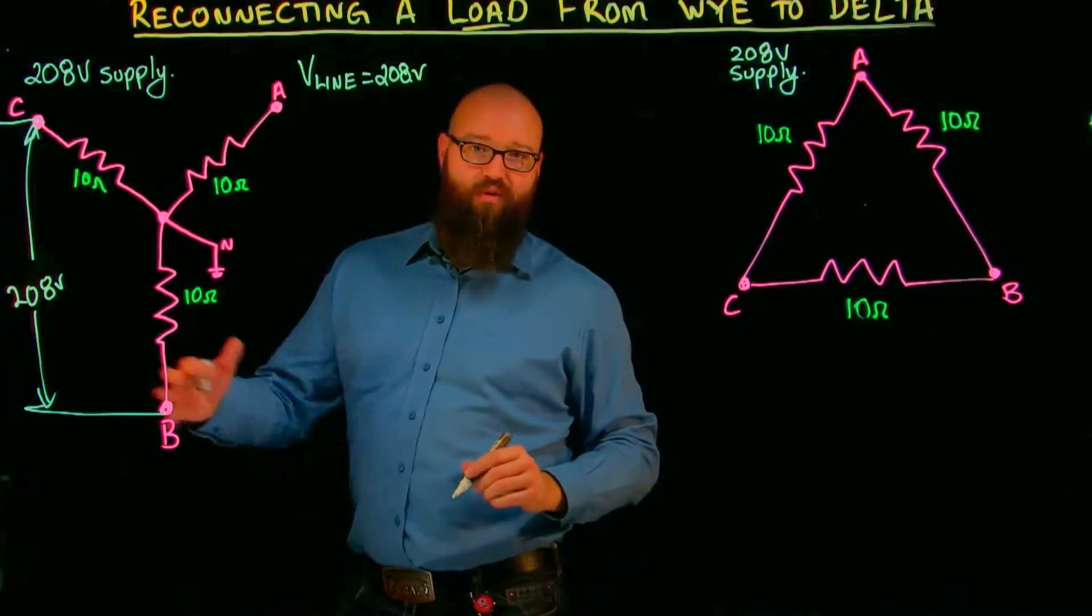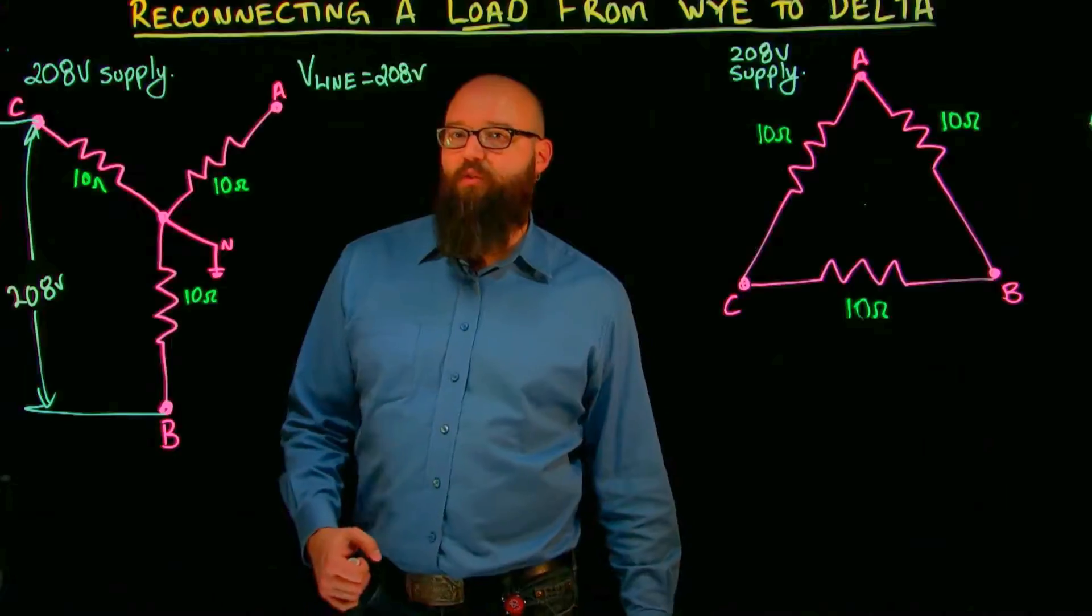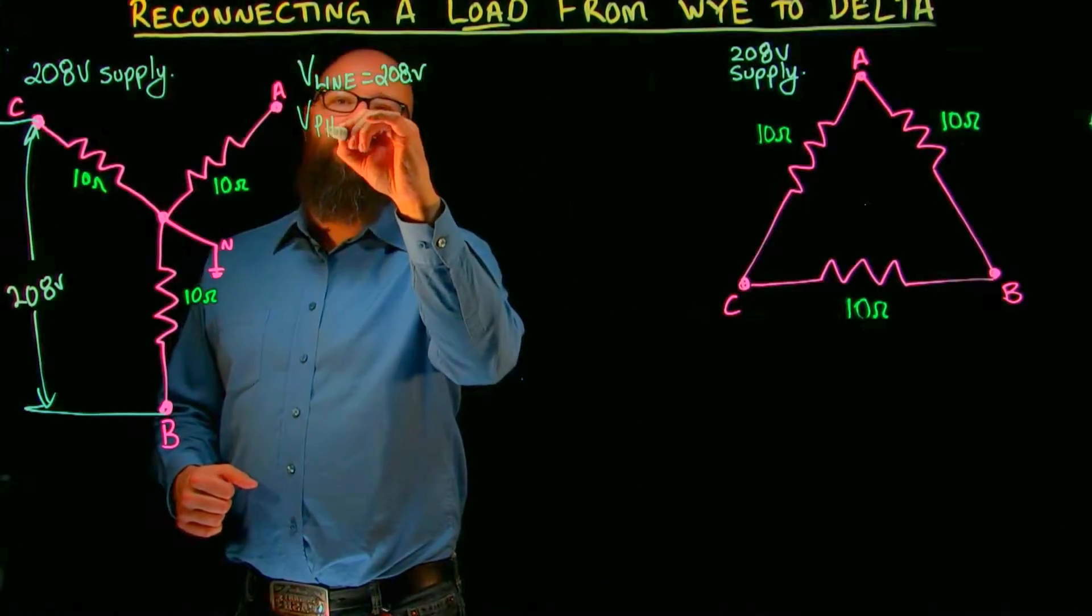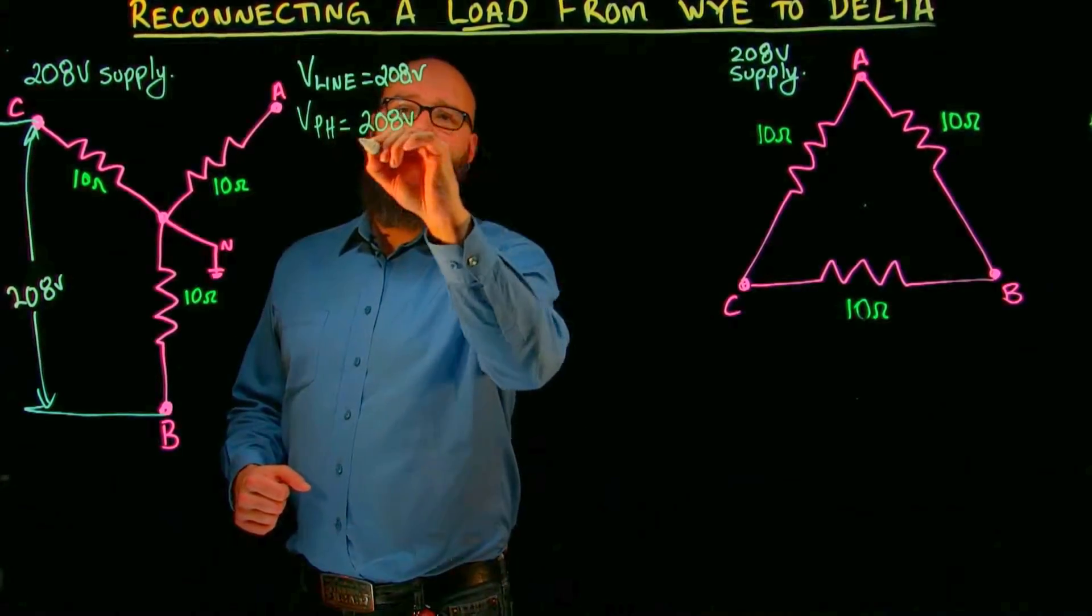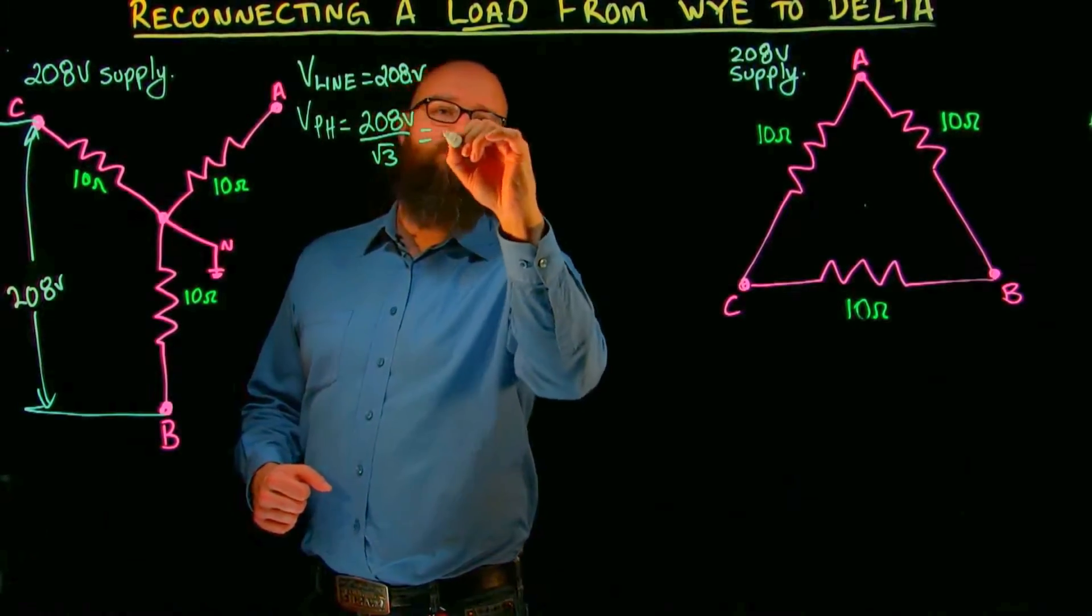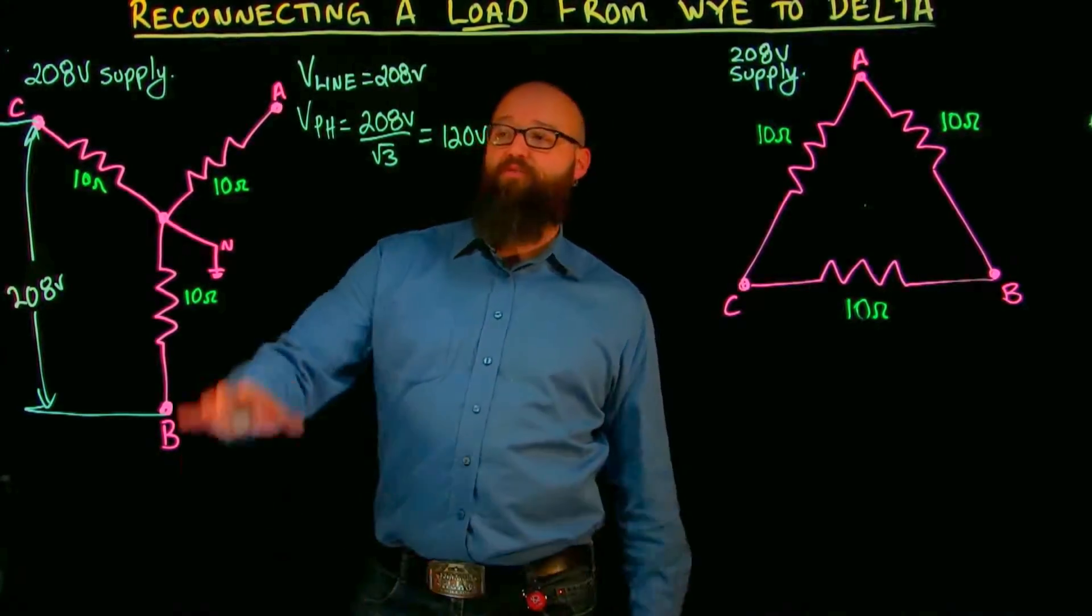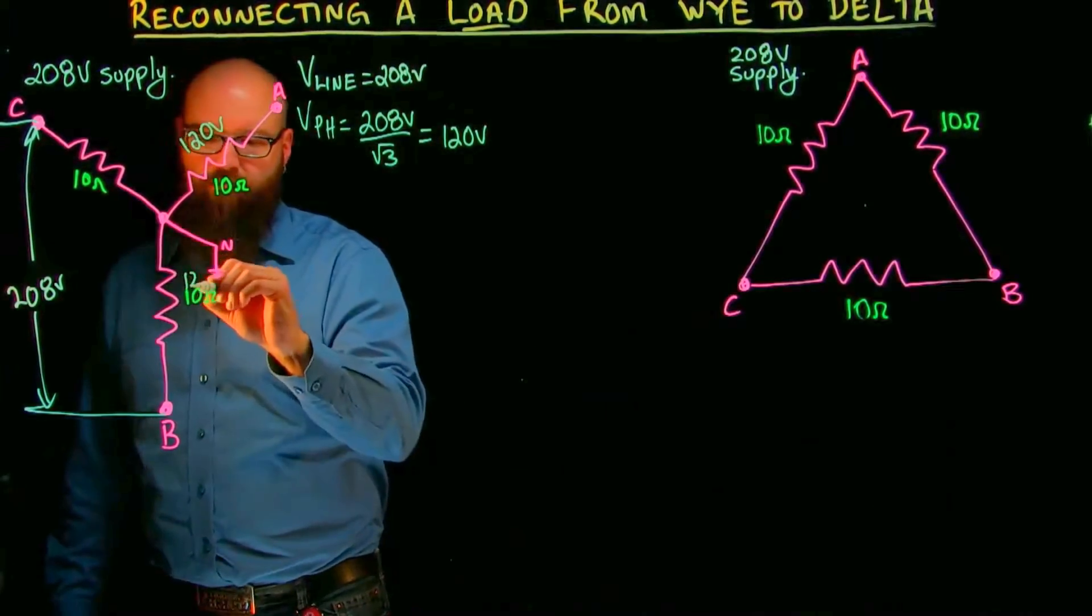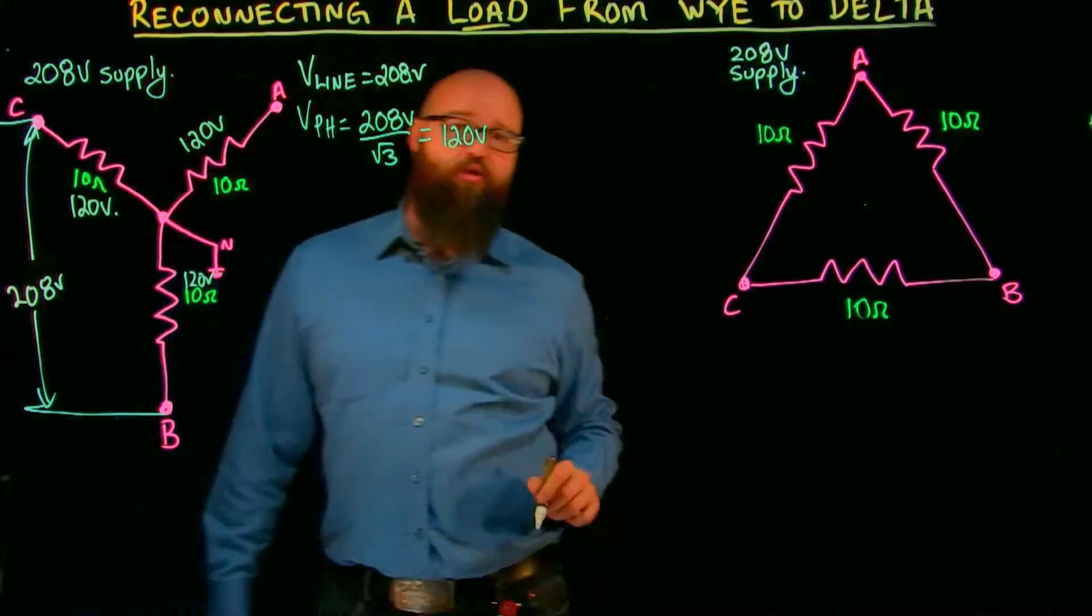Now three-phase with a Y connection, we know that line voltage is root 3 larger than phase voltage. So if we transpose that equation, we know that voltage of the phase is equal to 208 volts divided by root 3, which gives us 120 volts per phase. So with 120 volts per phase and 10 ohms of impedance per phase, what we can now calculate is the phase current.